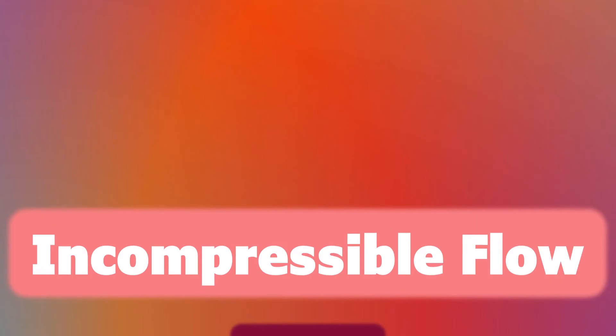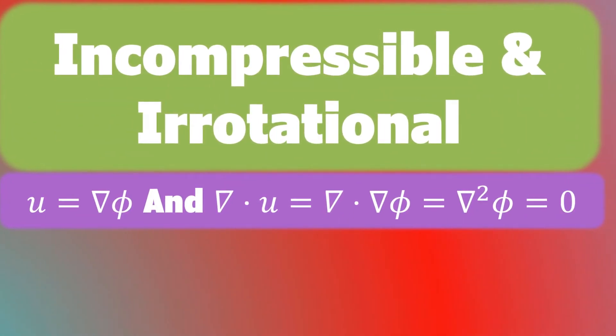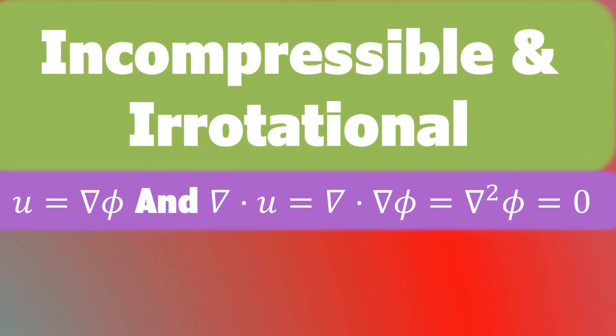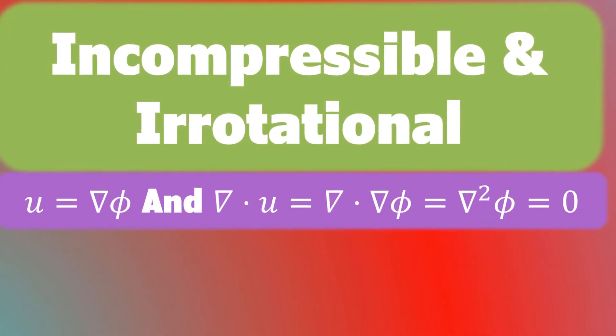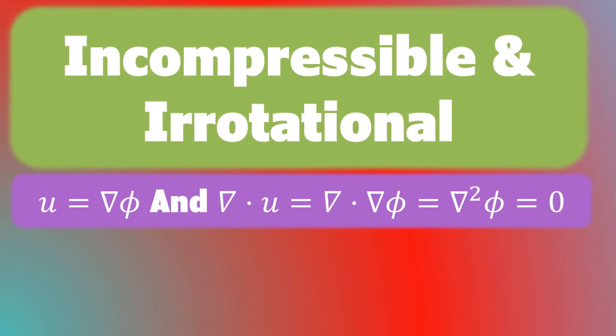For a flow that is both incompressible and irrotational, we can define a velocity potential phi with U equals grad phi, and then incompressibility gives us that the divergence of U is equal to the divergence of the grad of phi, which is equal to the Laplacian of phi, which equals zero.